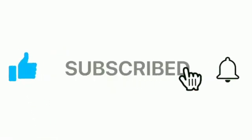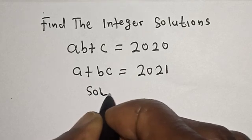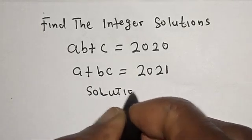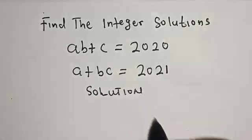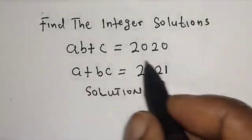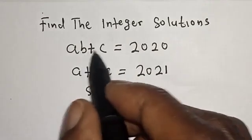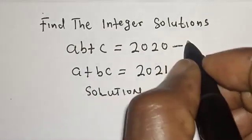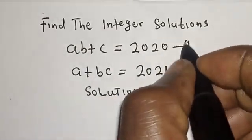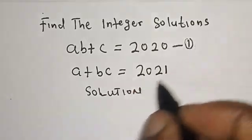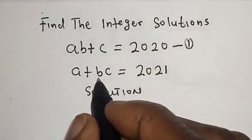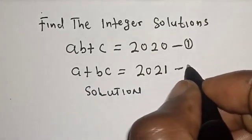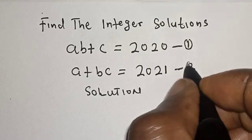Solution. A(B + C) is equal to 2020 — let's call this equation 1. Then (A + B)C is equal to 2021 — let's call this equation 2.